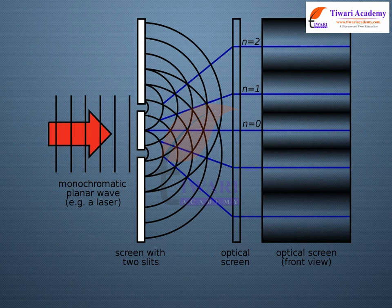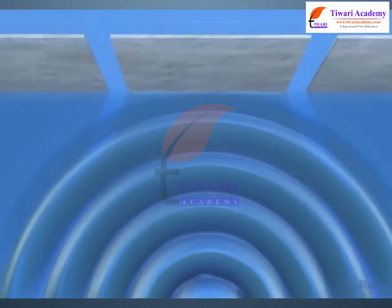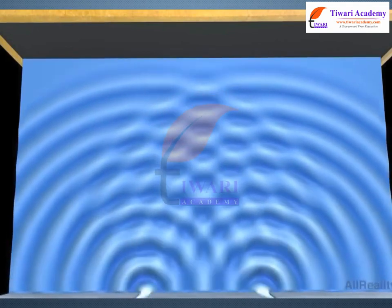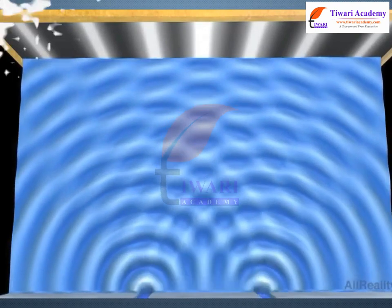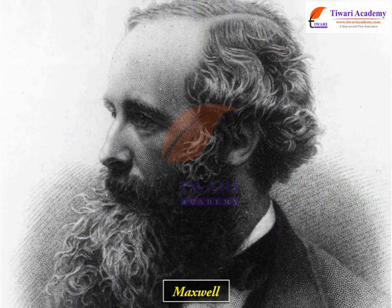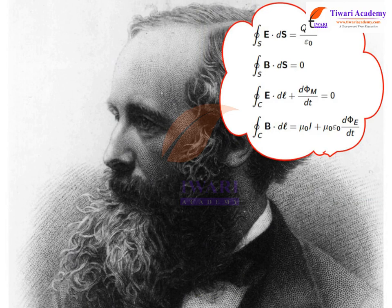Now, the wave theory seemed to be very well established. The only major difficulty was that since it was thought that a wave required a medium for its propagation, how could light waves propagate through vacuum? This was explained when Maxwell put forward his famous electromagnetic theory of light. Maxwell had developed a set of equations describing the laws of electricity and magnetism, and using these equations he derived what is known as the wave equation, from which he predicted the existence of electromagnetic waves.